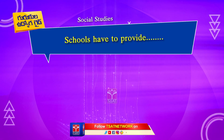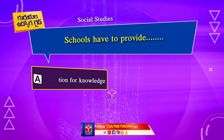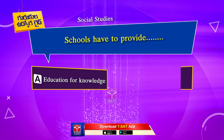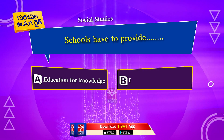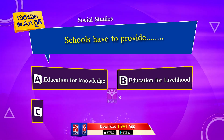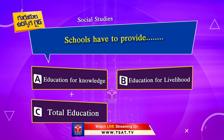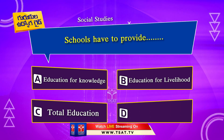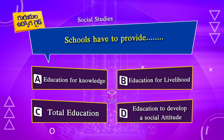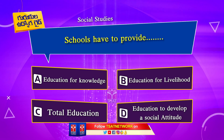Schools have to provide: Option A. Education for Knowledge. Option B. Education for Livelihood. Option C. Total Education. Option D. Education to Develop a Social Attitude. Your time starts now.